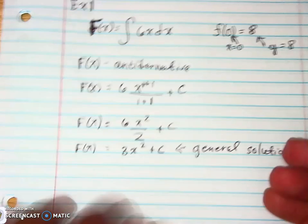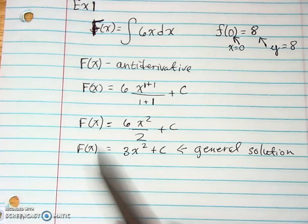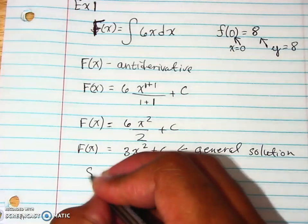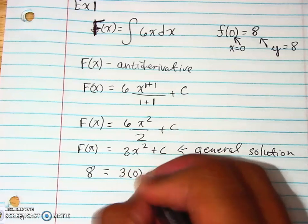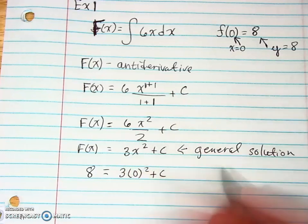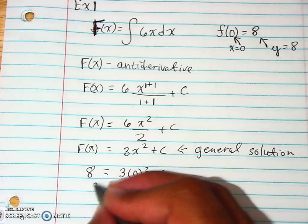And so here, when it comes to this portion here, f of x is the y. So that's our 8 right here. Our x value is 0. So we substitute 0 there. And so we get an answer of 8 equals C.